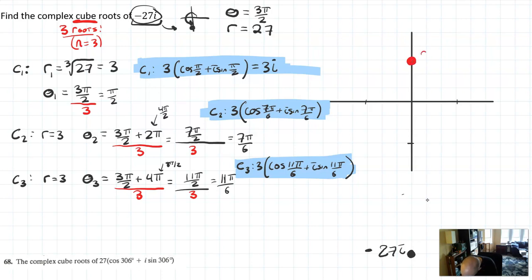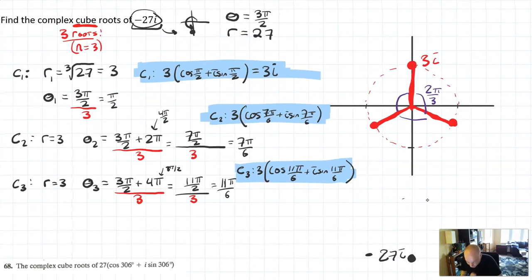The first root we said was 3i. The other roots we didn't put in rectangular form, but I know that they're going to be at a radius of 3, so they're going to be kind of on this circle of radius 3 at an angle of 7π over 6 and 11π over 6. And it is true when you look at it, that π over 2, 7π over 6, and 11π over 6 are equally spaced around the circle.